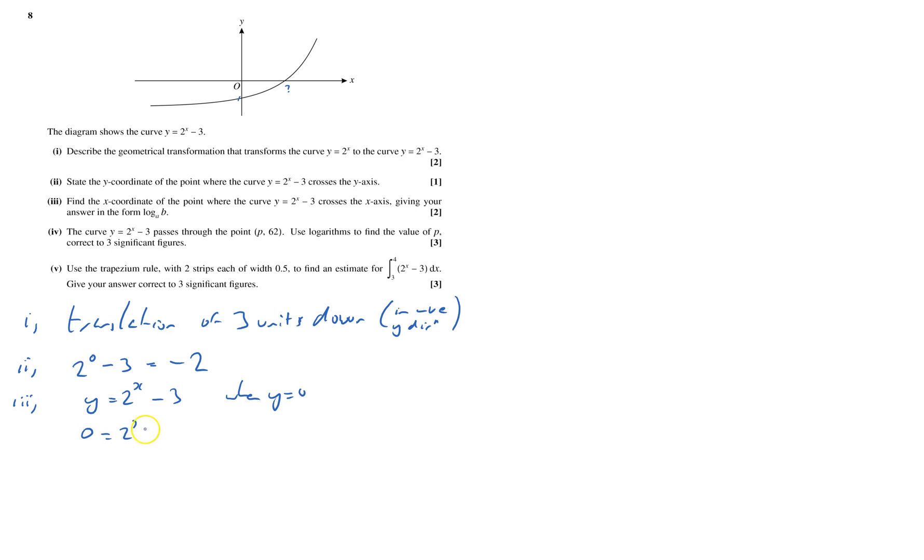So 0 equals 2 to the power of x minus 3. Add 3 to both sides gives me 2 to the power of x equals 3. And then I've got to log to the base of something. Well, I want the x to be straight down, so I need to do the inverse of 2 to the power of something, and that will be log to the base 2. So I'll log to the base 2 both sides. And that will vaporize the 2-bit and just leave it with x equals log to the base 2 of 3. And that's how they wanted it to be.